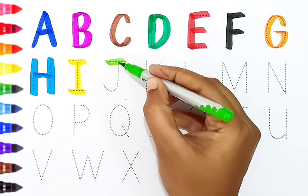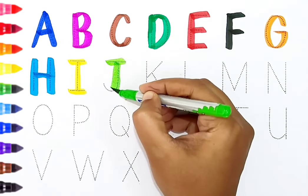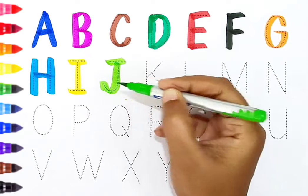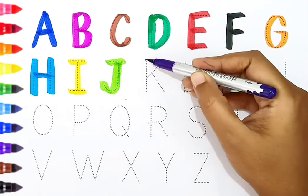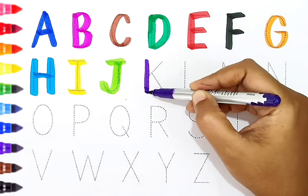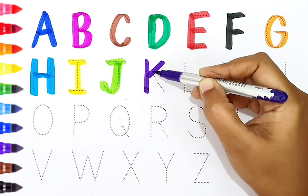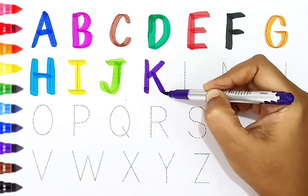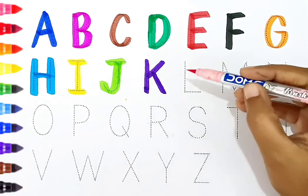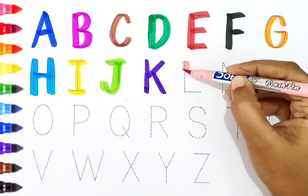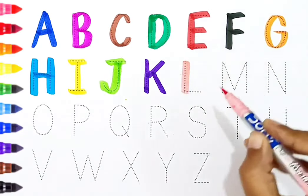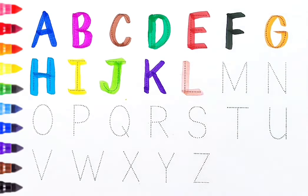J - light green color. K - violet color. L - light pink color.